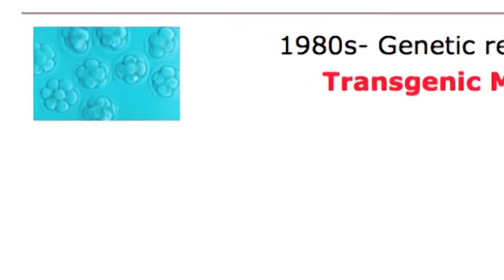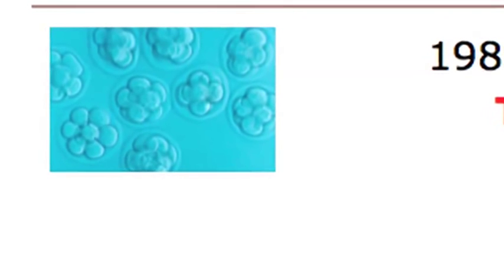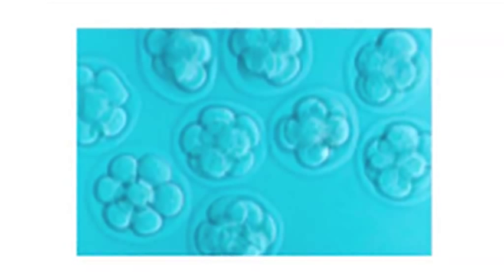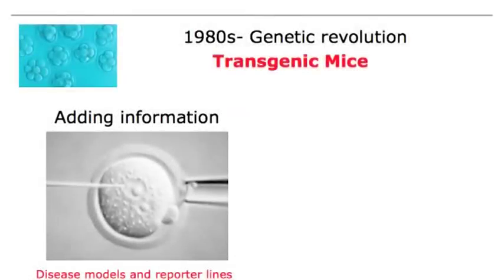The revolution at Harwell, the Sanger, and many places worldwide has been the ability to genetically engineer mice. This comes from the ability to manipulate pre-implantation embryos — fertilised embryos from a mouse that are two and a half days into gestation and haven't yet implanted into the uterus. At this stage they're four to eight cells. Embryos up to three and a half or four days can be manipulated genetically, allowing us to alter the DNA at a very early stage of development.